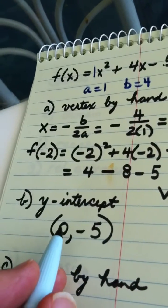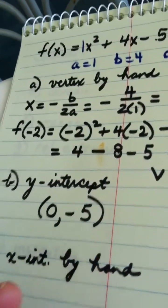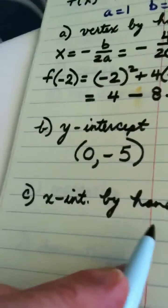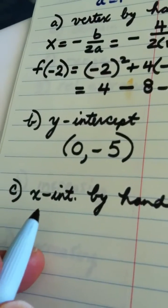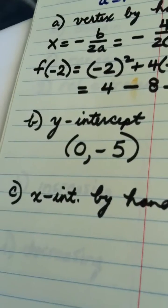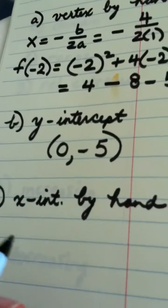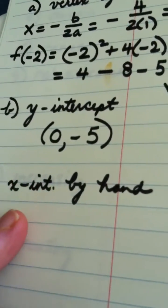But remember when you write it, don't just write negative 5, write 0 comma negative 5. Now to find the x-intercepts we have a little bit more work. The x-intercepts are where the y value is 0, and again you write them as ordered pairs.